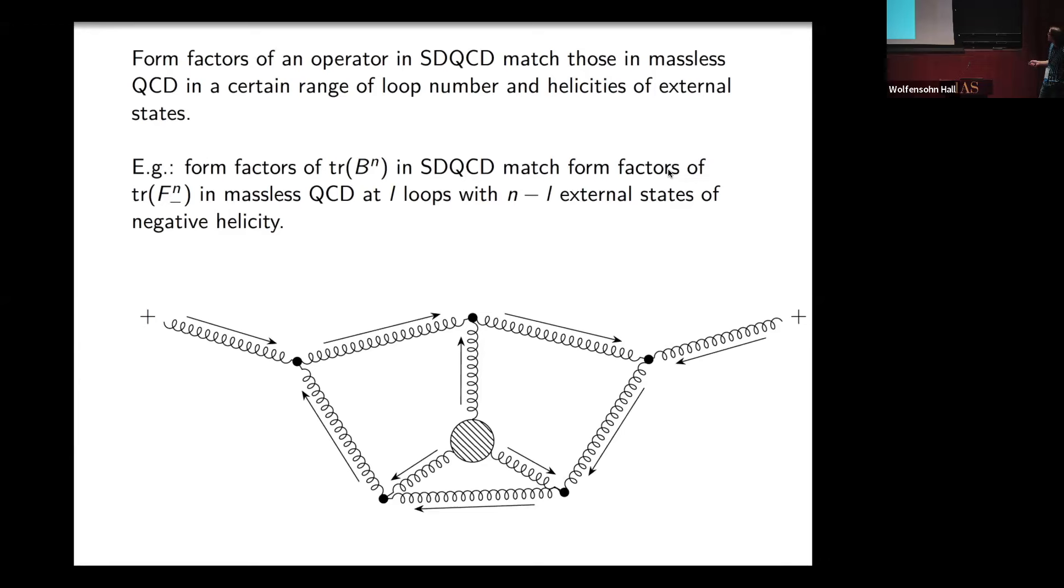Trace B to the N will tell me about the form factors of trace of F minus to the N at loops up to N loops. Here is a picture of trace B cubed. You can see from the combinatorics, this is a source for the helicity, and I can build a three-loop all-plus diagram. The aim in this program is to compute form factors in the self-dual theory.